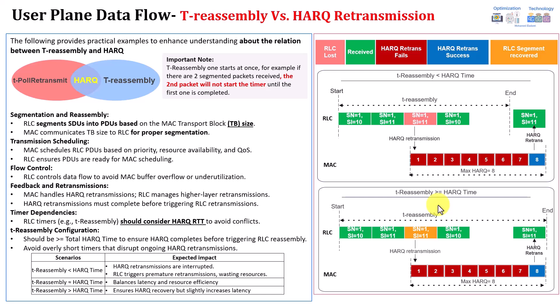One important point: for AM mode — for example when using VoNR or VoLTE — this timer is usually set to a very high value. In AM mode there is no RLC retransmission, so you need to give VoNR or VoLTE services time to mainly rely on HARQ transmission. You need to ensure 100% that HARQ completes. If the timer expires, the packet will be counted as lost. That's why voice services like VoNR, VoLTE, or even video services have a longer reassembly timer compared to data, because there is no chance for RLC retransmission.